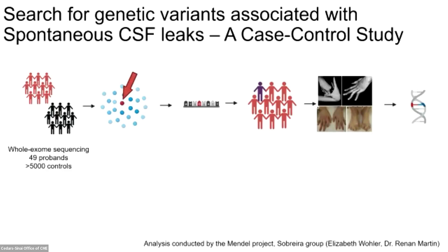We conducted whole exome sequencing of 49 probands who have type 1b spontaneous spinal CSF leaks and collectively over 5,000 controls who did not. We then filtered for variants that were rare — that is, they have a minor allele frequency less than 0.01, meaning less than 1% of patients have the variant — and filtered for variants that could have deleterious effects on protein structure or expression: missense, stop gain, indel, or splice variants.